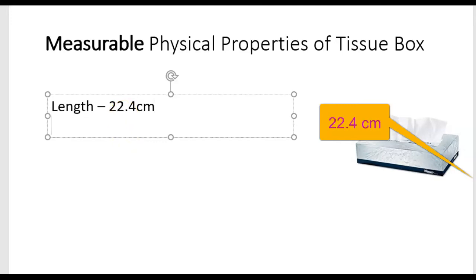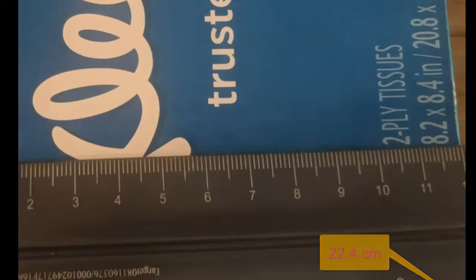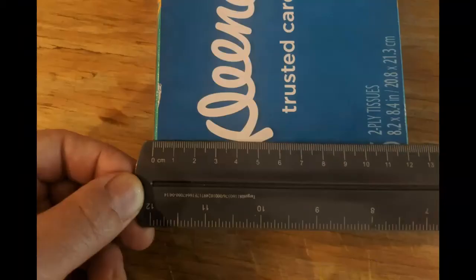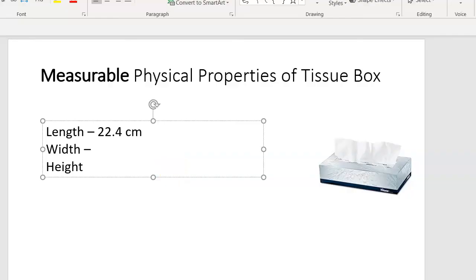Now we're going to measure the width and the height. We lined up the tissue box correctly on the zero. The width is just past the 12 — it looks like it's one line past the 12. So go ahead and write down the width in the correct format. When we measured the width, it was one line past 12, so it would be 12.1 centimeters, written as 12.1.